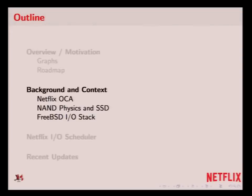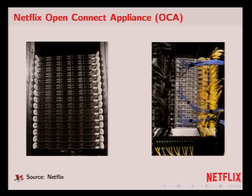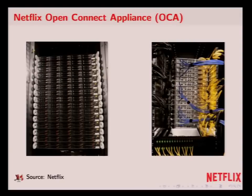I'll start with an overview of the Open Connect appliance. We have racks of these things in different data centers. They have different Netflix videos on them that we stream to our customers. Each of these systems can do on the order of 35 to 38 gigabits a second of video streaming. We have stacks like this in multiple data centers that we use to offload the video streams, so all of the video you're watching doesn't come from Netflix corporate headquarters — it comes from someplace close to your ISP.